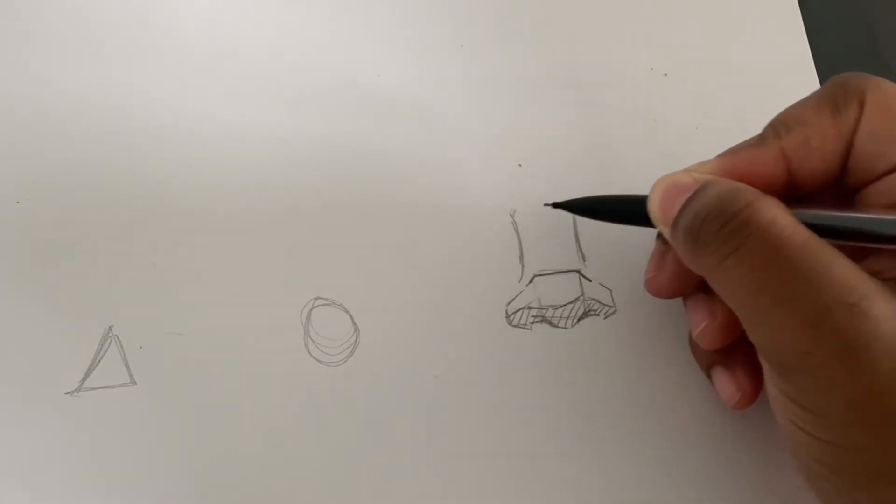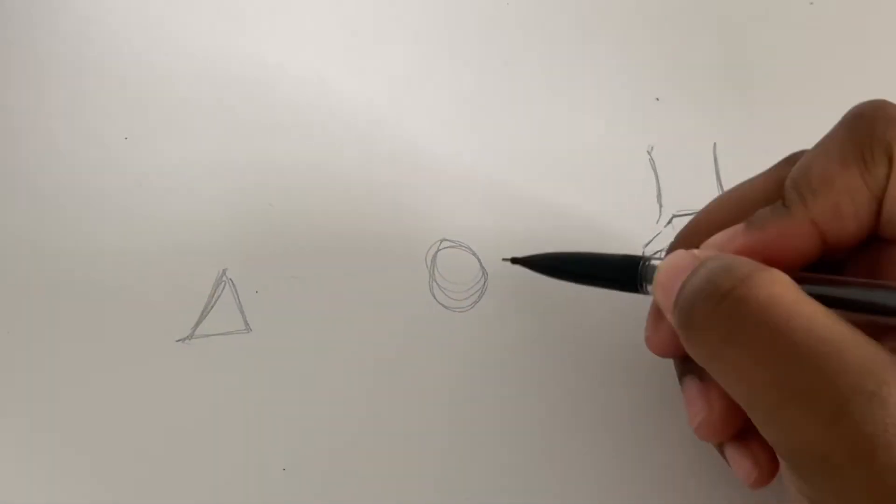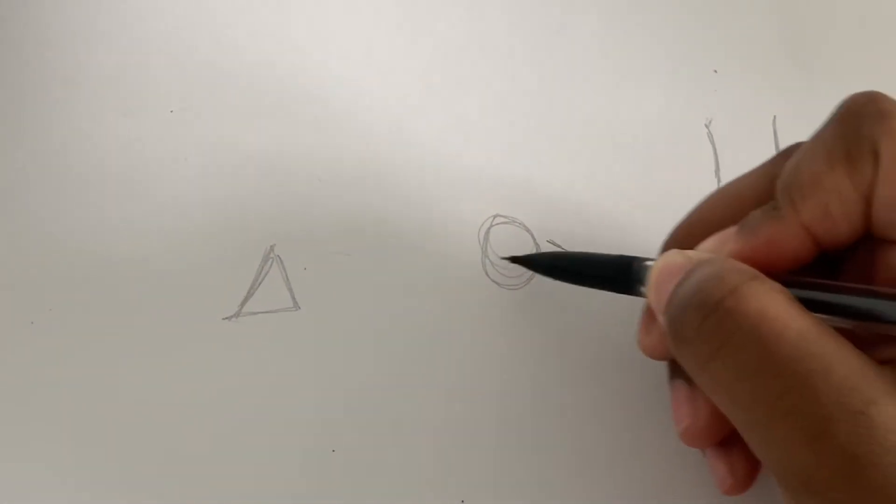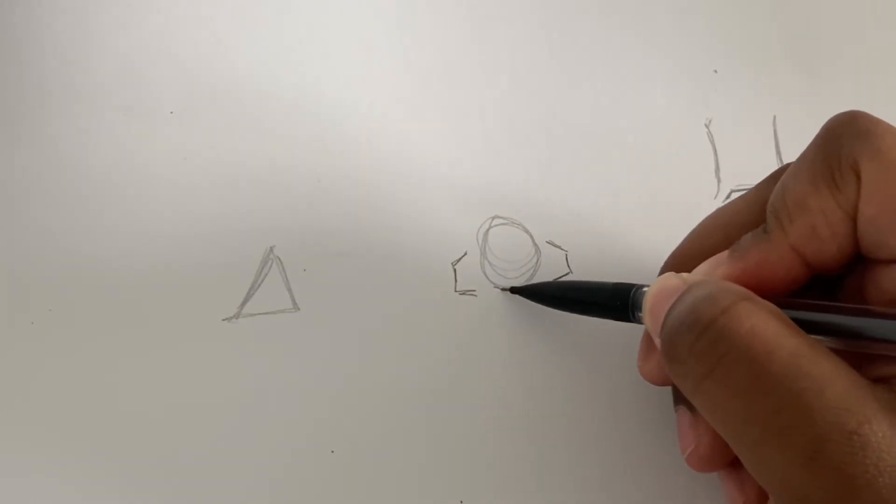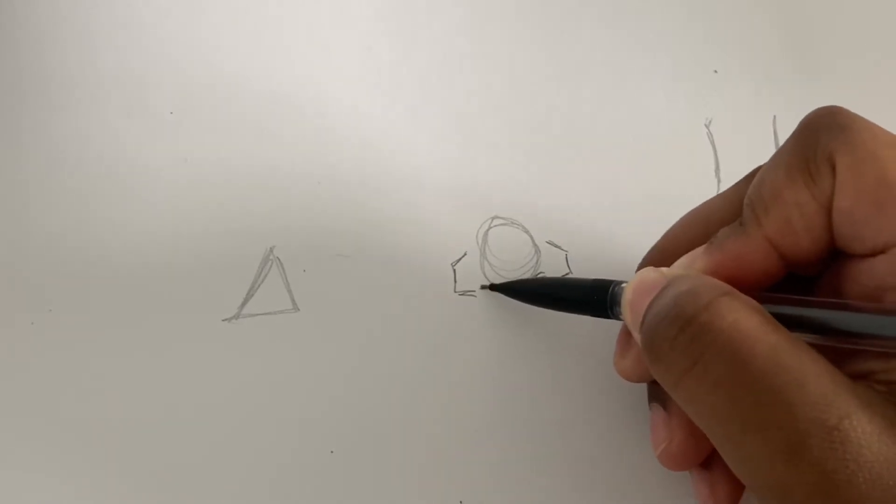So you can see here it makes it look kind of 3D. Moving on to the circle, I do the same concept over here, making sure to go on the contour lines of the circle. Now the reason why I made a square, a circle, and a triangle...